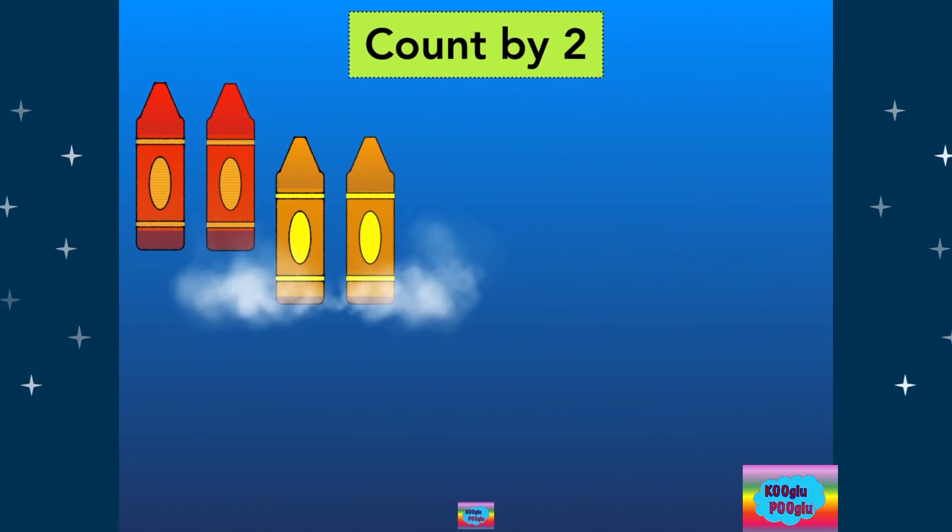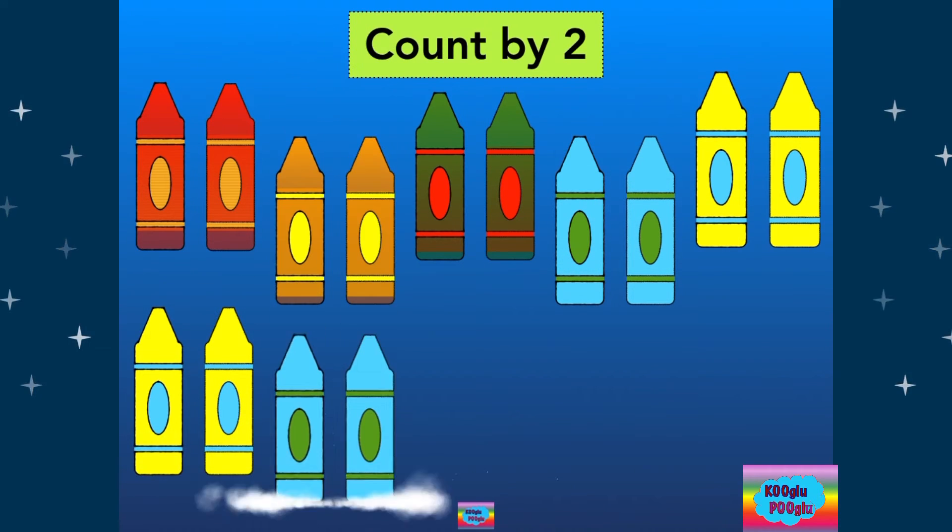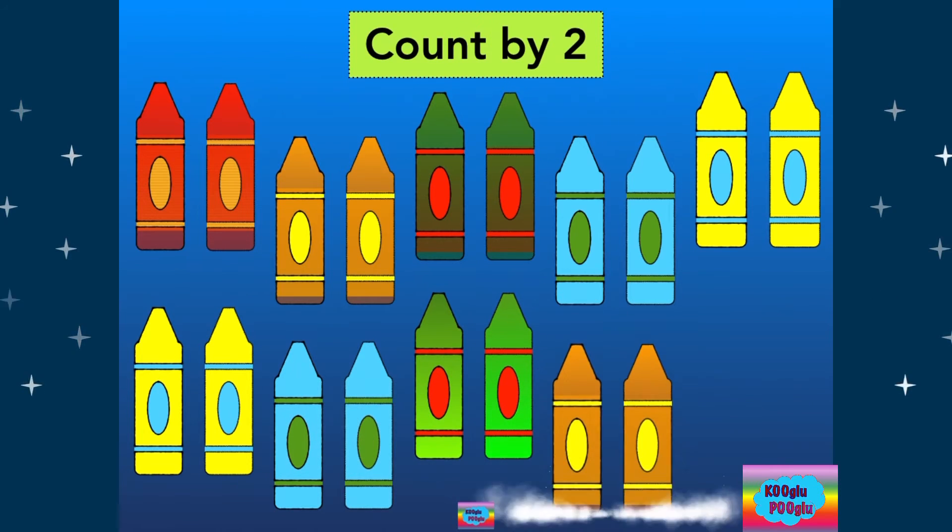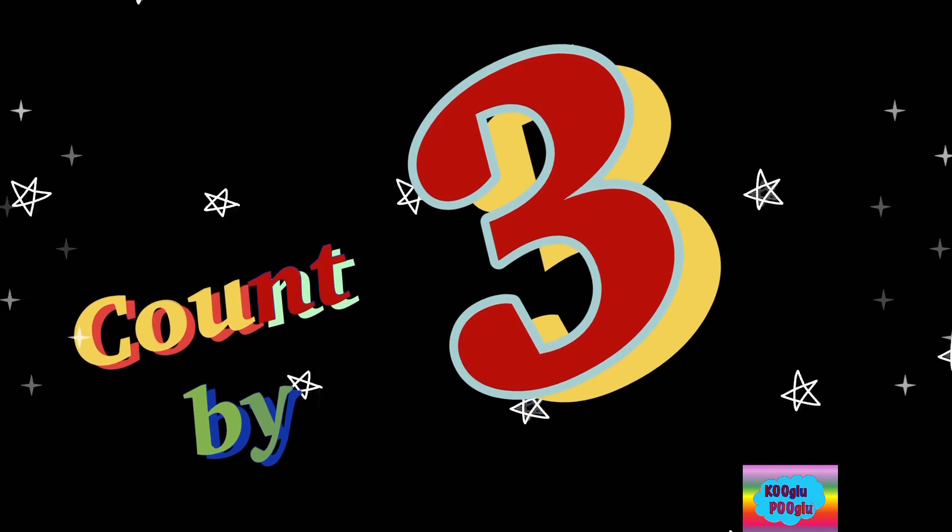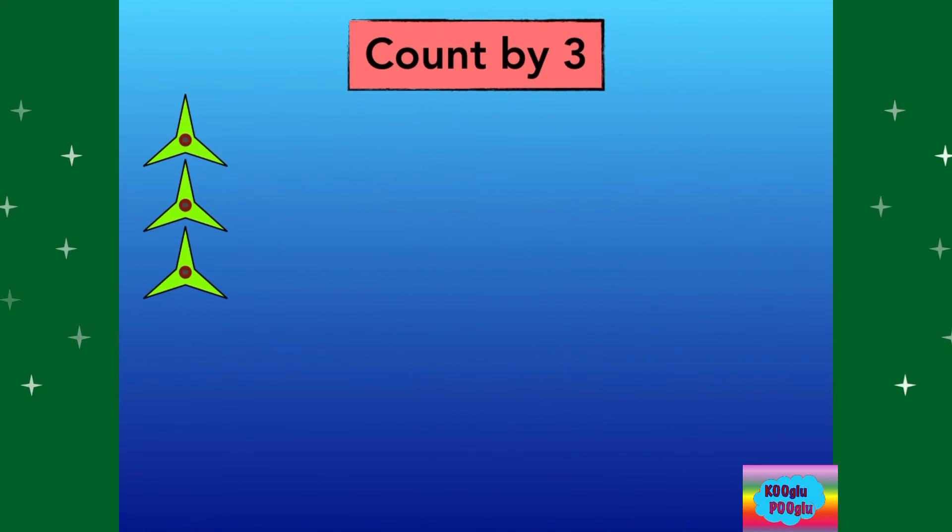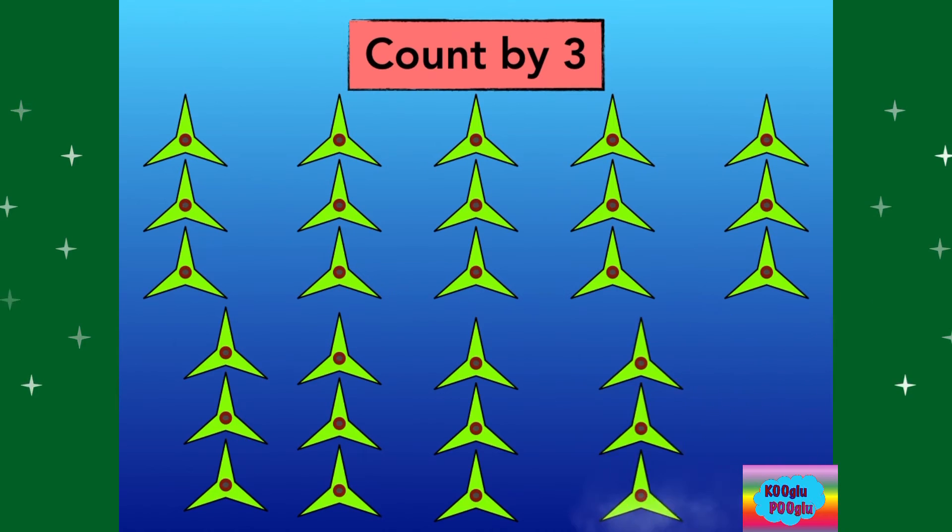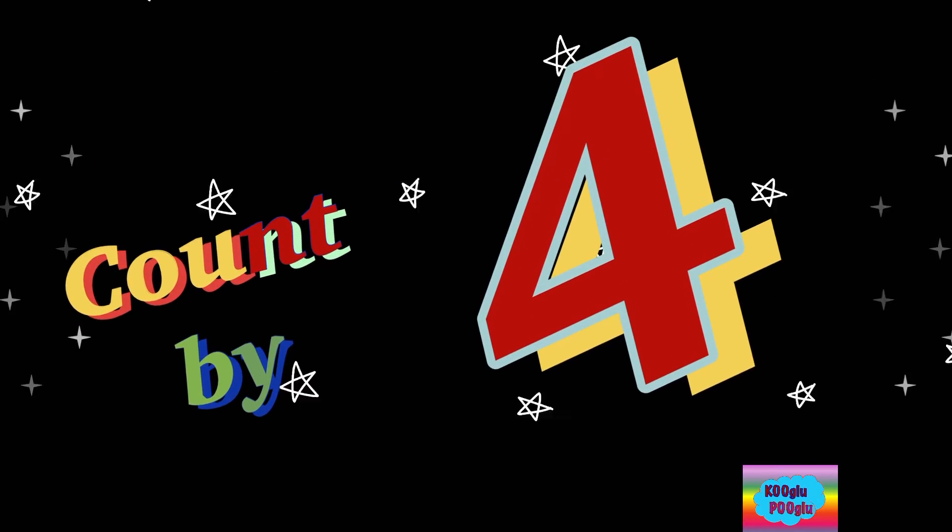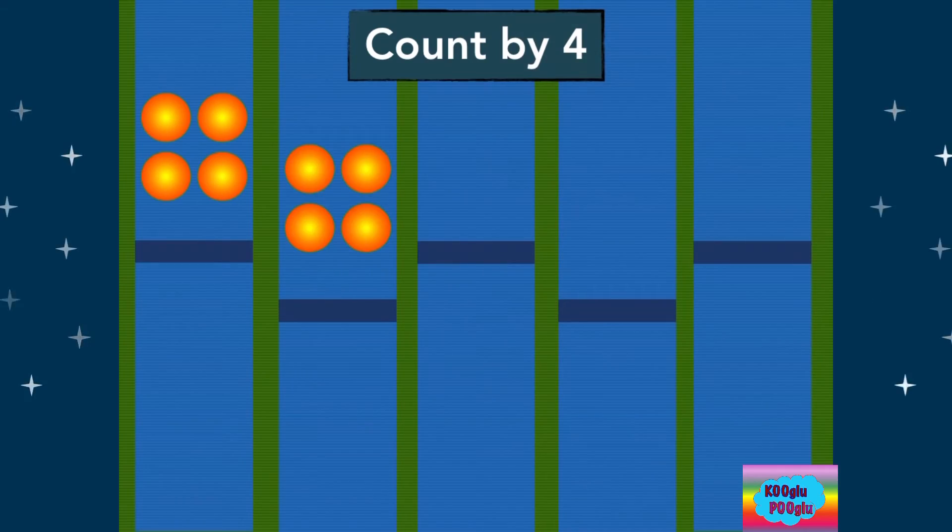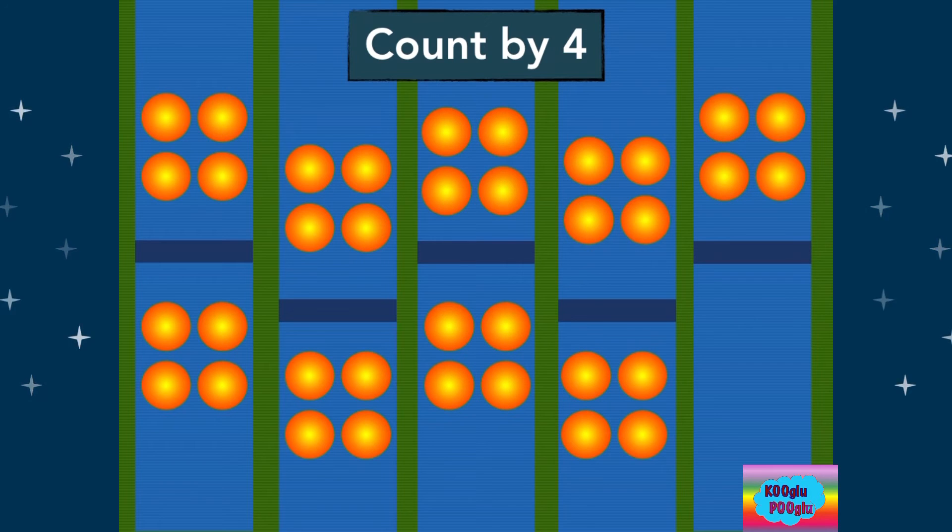Two, four, six, eight, ten, twelve, fourteen, sixteen, eighteen, twenty. Three, six, nine, twelve, fifteen, eighteen, twenty-one, twenty-four, twenty-seven, thirty. Four, eight, twelve, sixteen, twenty, twenty-four, twenty-eight, thirty-two, thirty-six, forty.